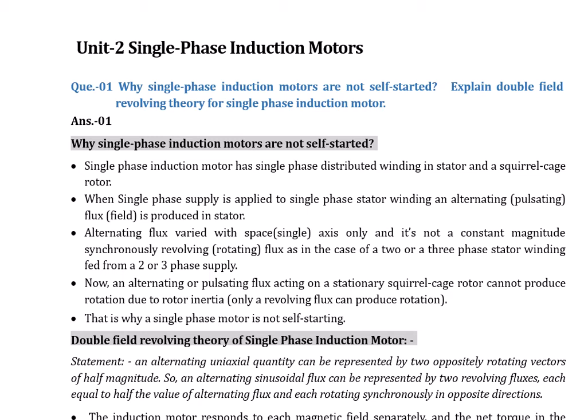An alternating or pulsating flux acting on a stationary squirrel cage rotor cannot produce rotation due to rotor inertia. We do not have any revolving flux — we cannot produce an RMF (Rotating Magnetic Flux). Due to this absence of RMF, the single-phase squirrel cage motor is not self-starting. The reason is that in a single-phase induction motor we have alternating pulsating flux, but not rotating magnetic flux.